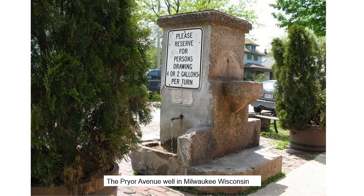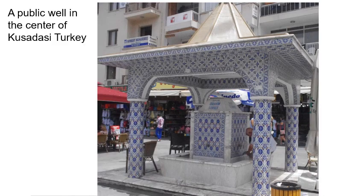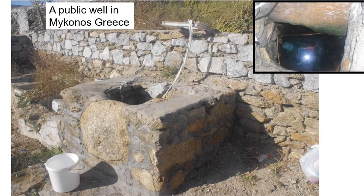Here's an example of one still being used today in Milwaukee, Wisconsin — the water is still flowing and you can still get clean groundwater from it. There's one in Kusadasi, Turkey where people can still come and use the groundwater. This is a very old well in Mykonos, Greece — there's a bucket on the end of a rope. While standing there, some locals actually came up and got water out of the well, put it in containers, and apparently took it back to their home.